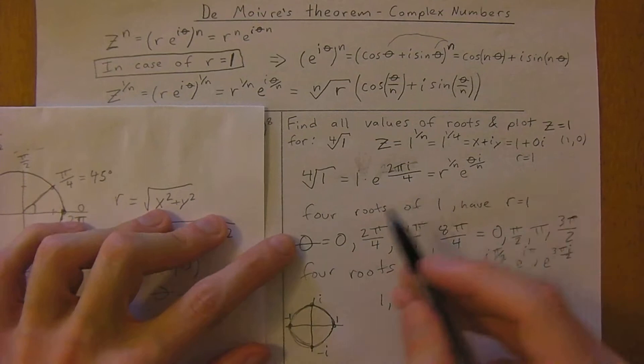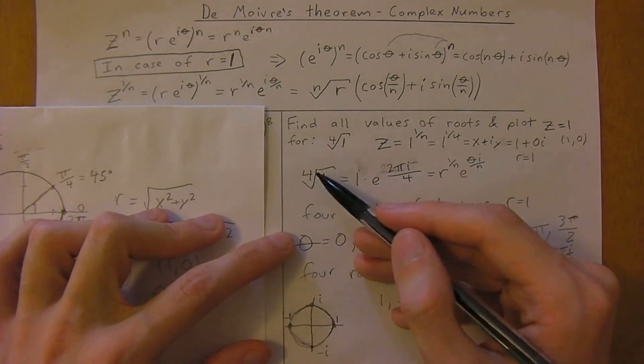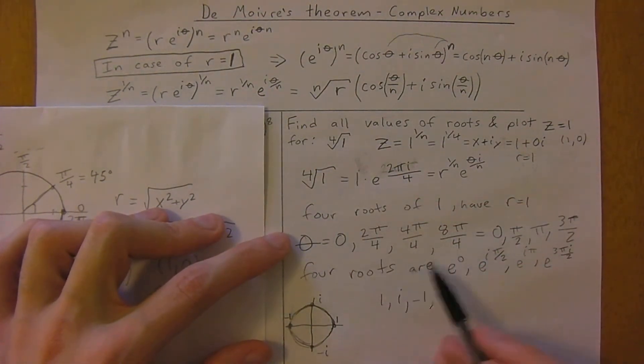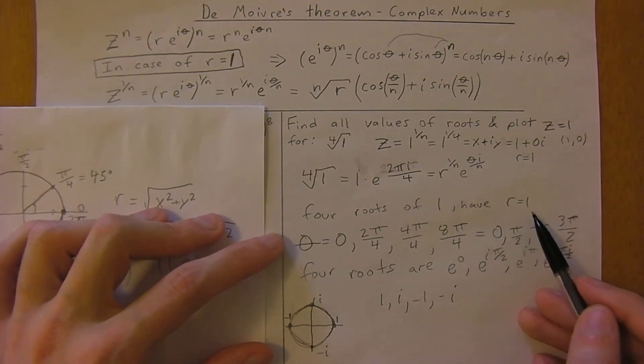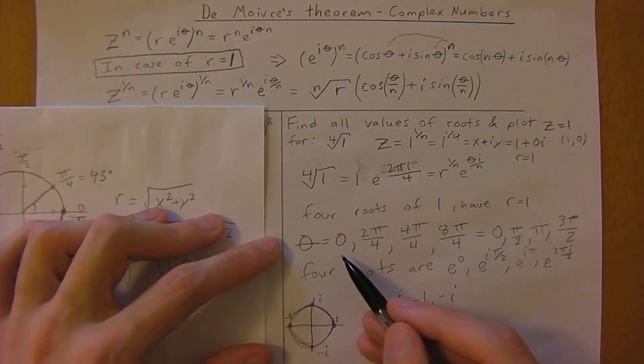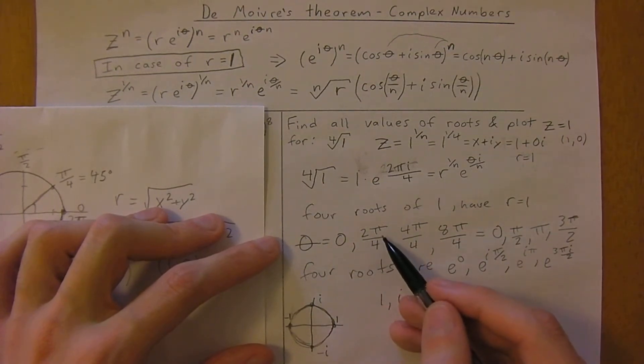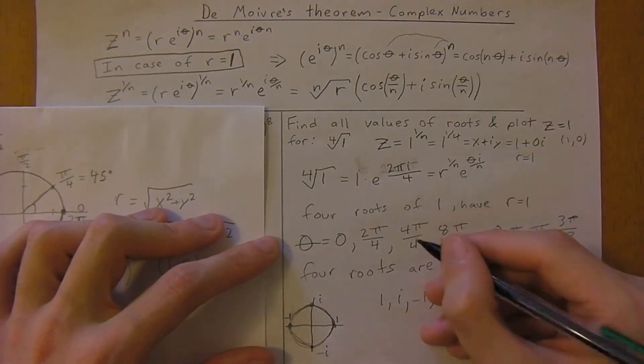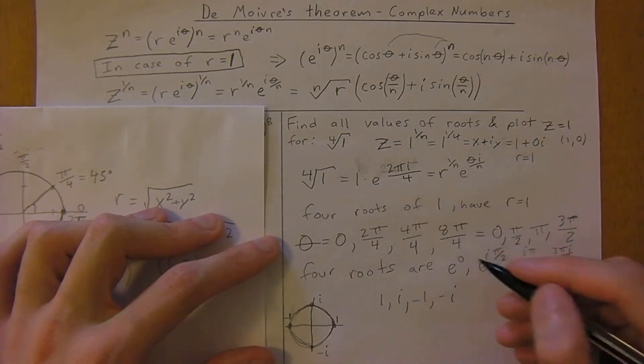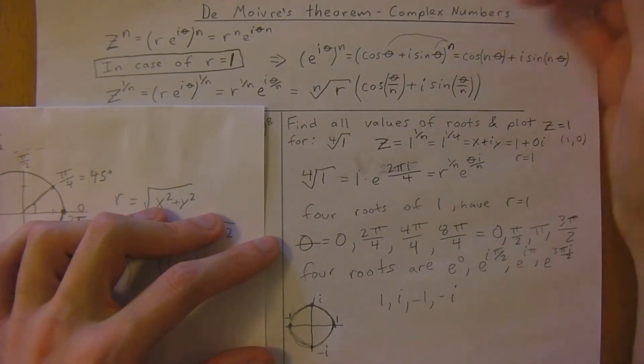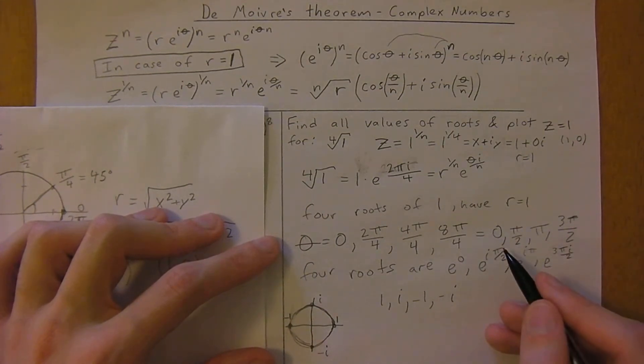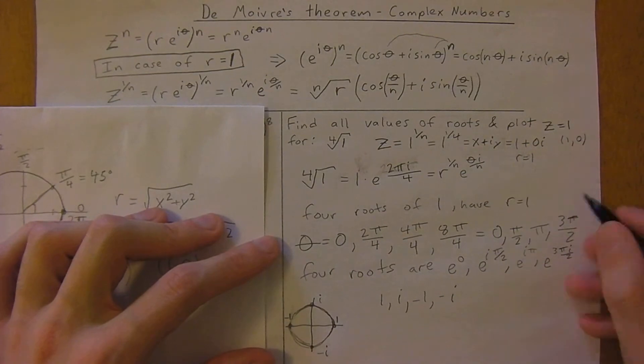We now know that if you have the fourth root, you're going to have four answers. The four roots of 1 with modulus equal to 1 are going to be 0, 2 pi divided by 4, 4 pi divided by 4, and 8 pi divided by 4. This becomes 0, pi divided by 2, pi, and 3 pi over 2.